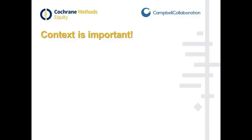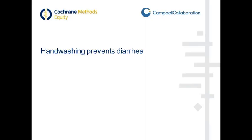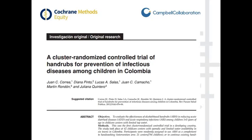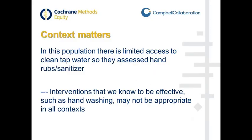Another thing to consider for health equity is that context is really important. Hand washing prevents diarrhea, and probably everybody would agree that hand washing prevents diarrhea — but that's only true if clean water is available. We have an example of a study that assessed the effectiveness of alcohol-based hand rubs or hand sanitizers to prevent infectious diseases in Colombia, where there was limited access to clean tap water. So they had to assess a different intervention and chose hand sanitizer. Just that context is important because interventions we know to be effective, like hand washing, might not necessarily be appropriate in all contexts.